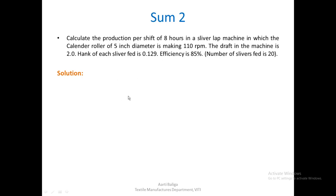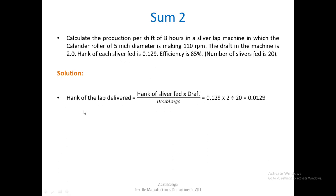To calculate production we need two values: the surface speed of the output roller and the hank of the delivered material. The output roller data (5 inches, 110 rpm) is given, but the output material hank is not. Using the draft formula with the given draft of 2, number of doublings of 20, and feed sliver hank of 0.129, we calculate the delivered lap hank as 0.0129.